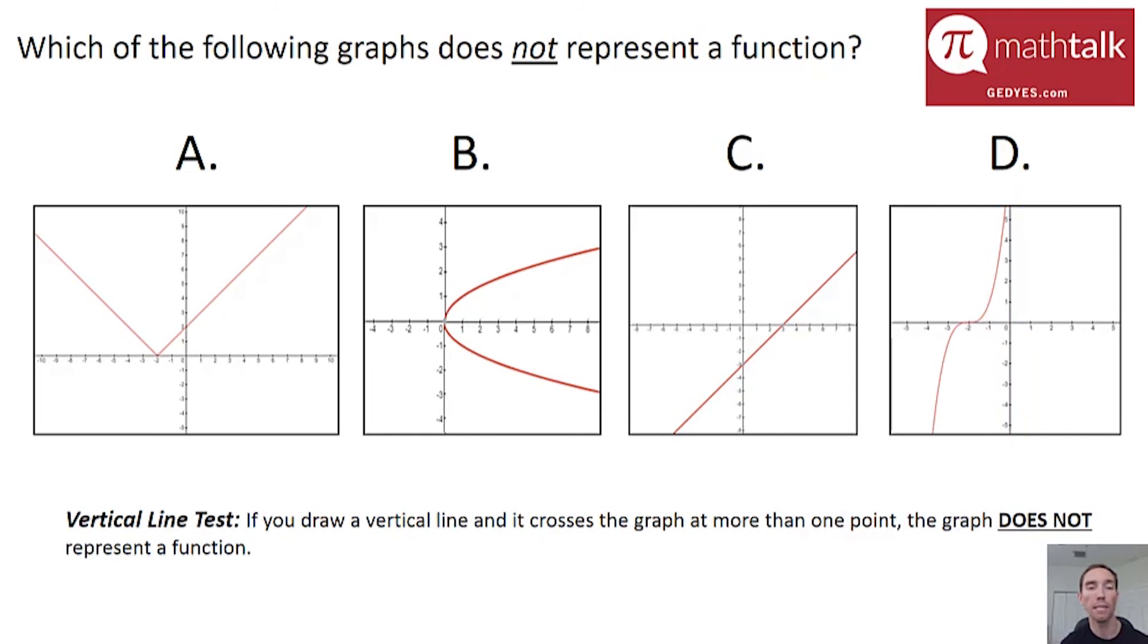If I were to look and see which of these fails the vertical line test, it's going to be pretty simple to see that it's B. Because right there, I have a vertical line that crosses the red graph at two different points. And so it fails the vertical line test, which means that is not a function.